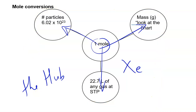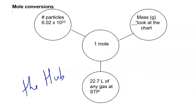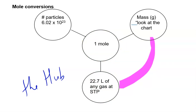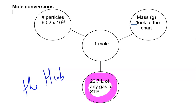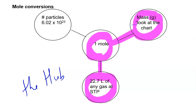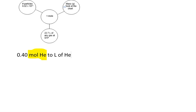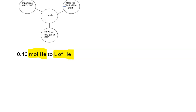Each line on the hub is one conversion. Going from outside in — like mass to moles — is one conversion. Going from inside out — moles of gas to volume — is also one conversion. But going from outside to outside, like liters to mass, requires going through the center hub first: convert liters to moles, then moles to mass. That's a two-step conversion. For example, going from moles of helium to liters of helium is a hub problem, and it is one step.